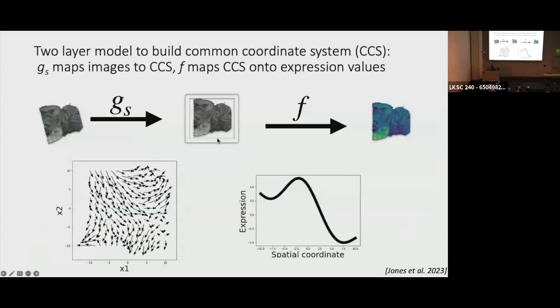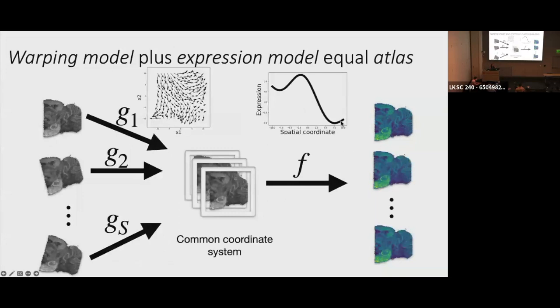It's called Gaussian Process Spatial Analysis, or GPSA. The idea is that we have a two-layer model — two layers of a Gaussian process — and we use it to build a common coordinate framework using a handful of 2D spatial images. For example, we'll have Slide-seq V2, MERFISH, or whatever your approach of choice is. They're all from approximately the same tissue, and we can map them all down to the same coordinate space. At each point in that shared coordinate system we can define what gene or protein expression looks like.